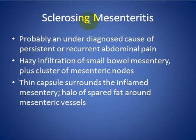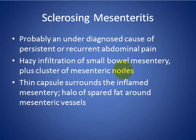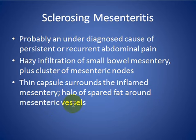Sclerosing mesentery is probably an underdiagnosed cause of persistent or recurrent abdominal pain. There is hazy infiltration of the small bowel mesentery with a cluster of mesenteric lymph nodes. A thin capsule surrounds the inflamed mesentery, associated with a halo of spared fat around mesenteric vessels.